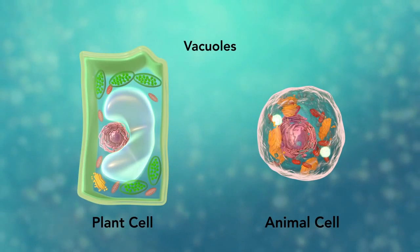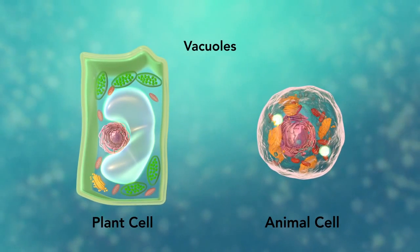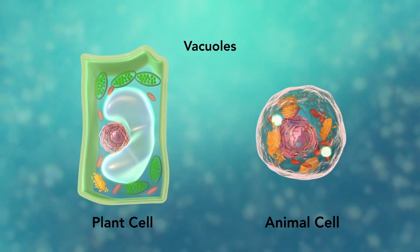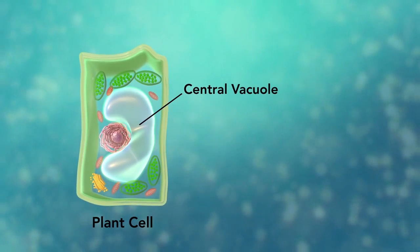Vacuoles are sac-like structures that store different materials. Here, in this plant cell, the central vacuole stores water.